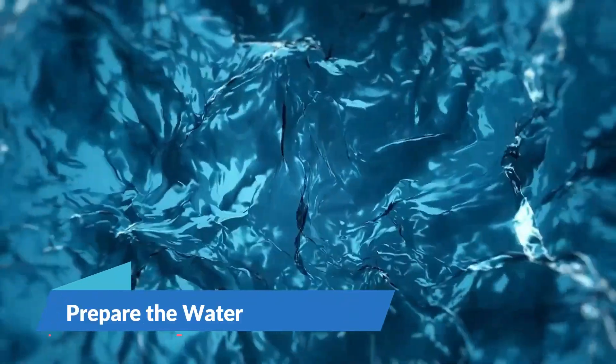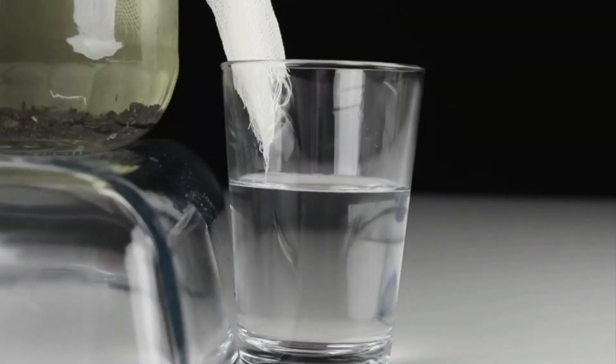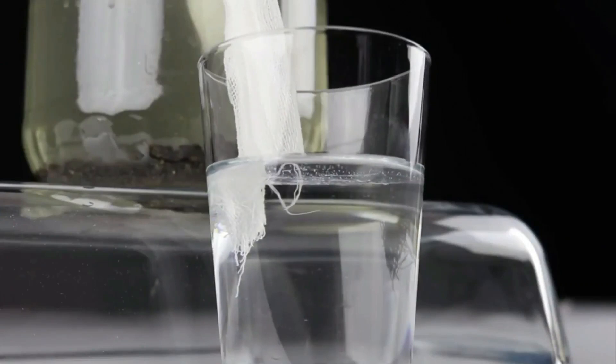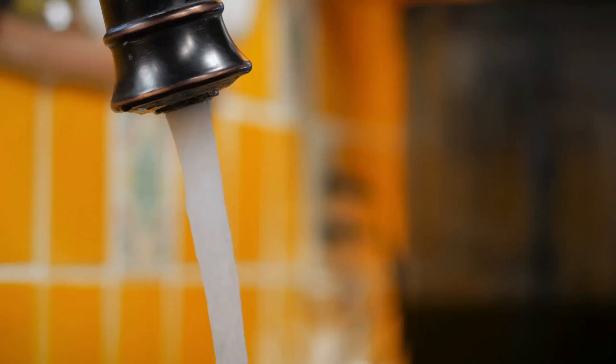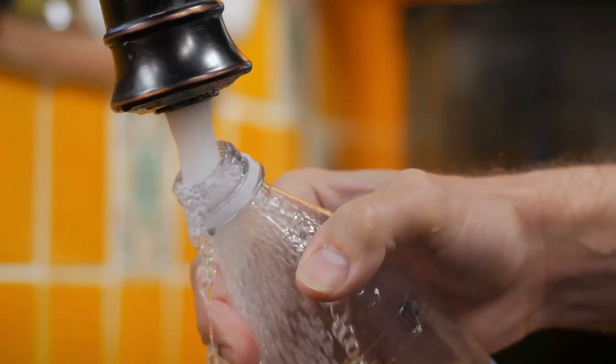Step 2: Prepare the water. If the water is turbid or colored, filter it using a cloth or let it settle until it clears. Only clear water should be used because suspended particles can protect microorganisms from UV light. Fill the bottles to the top and tighten the cap to avoid any contamination.